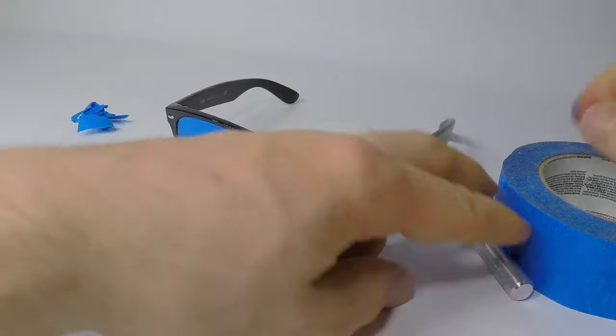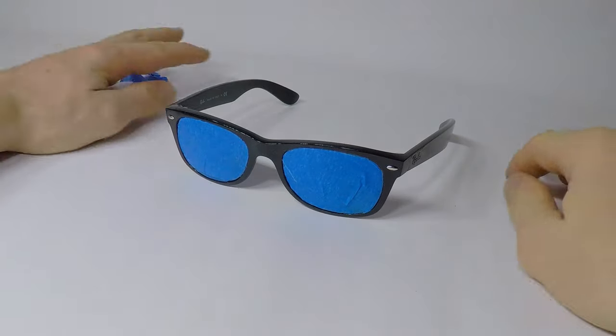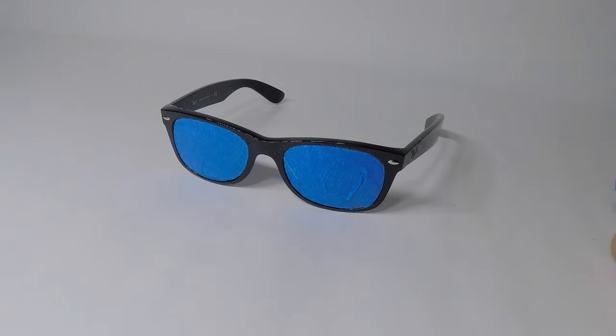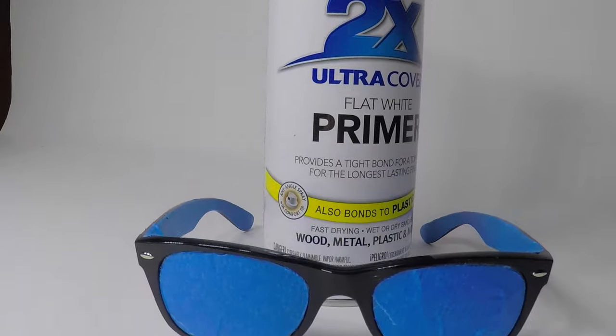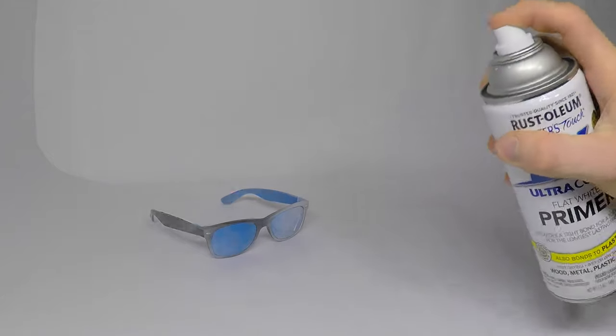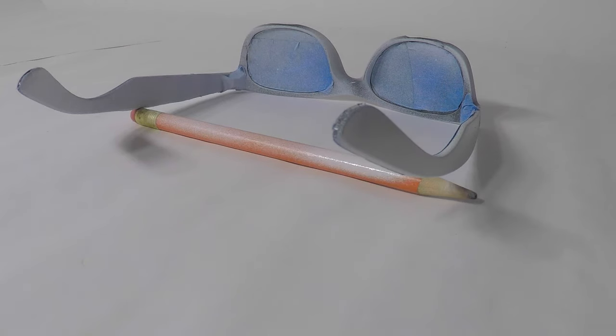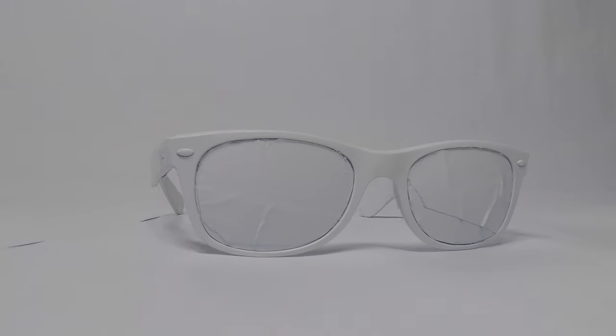Clean up and get ready to spray on your white primer. Spray the white primer with light, even strokes. Make sure you spray every side and then you can spray it with white paint.